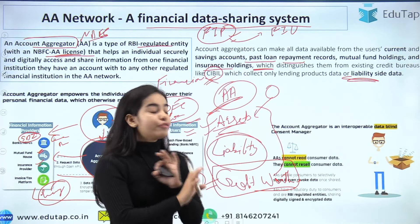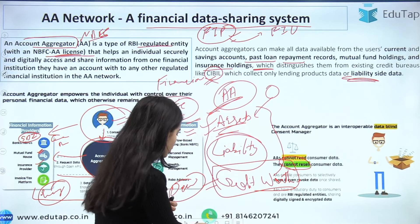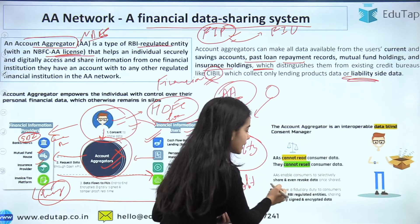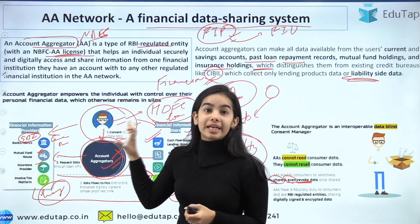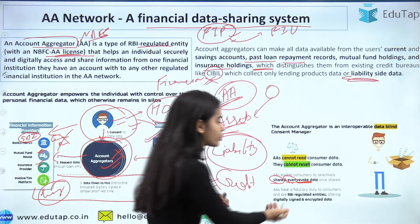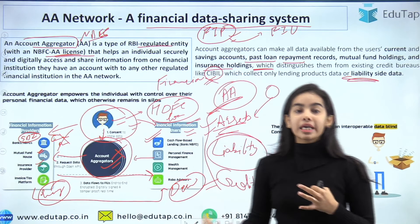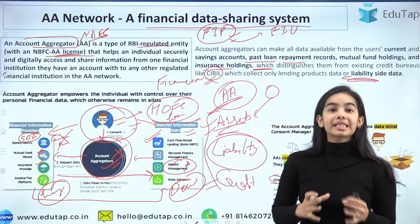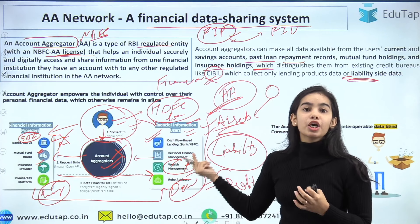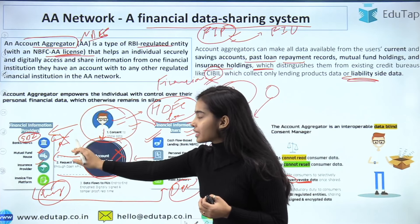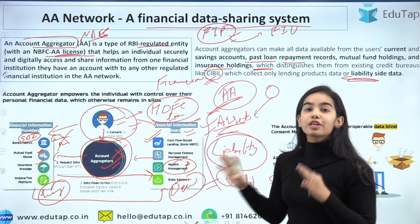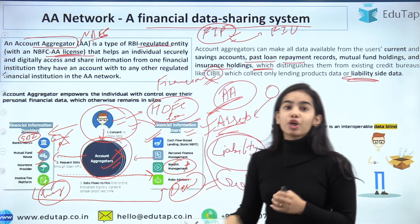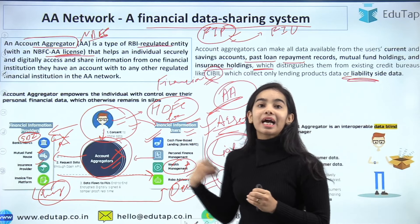Account Aggregators are data-blind — they cannot see or read the data because it is encrypted, and they cannot resell the consumer data. The AAs enable consumers to selectively share and even revoke data. The customer can choose selectively — for example, data should come only from SBI and not from Canara Bank, or only from specific mutual fund houses. Wealth management companies can also benefit by easily viewing a person's complete wealth across institutions and providing the best solutions.